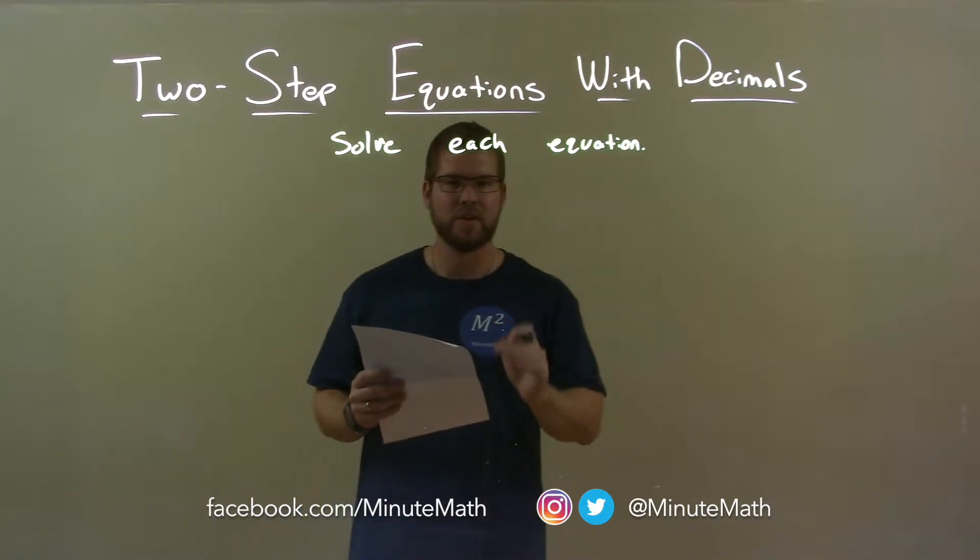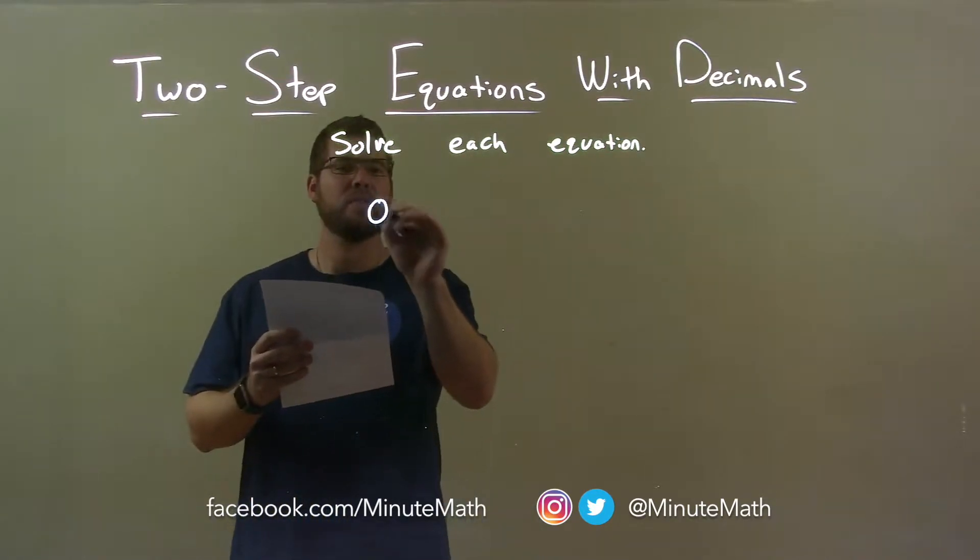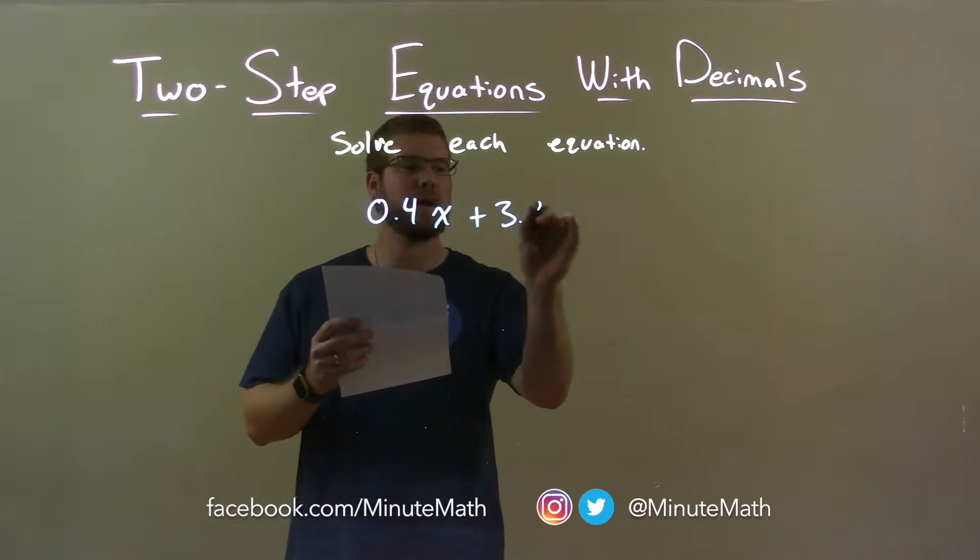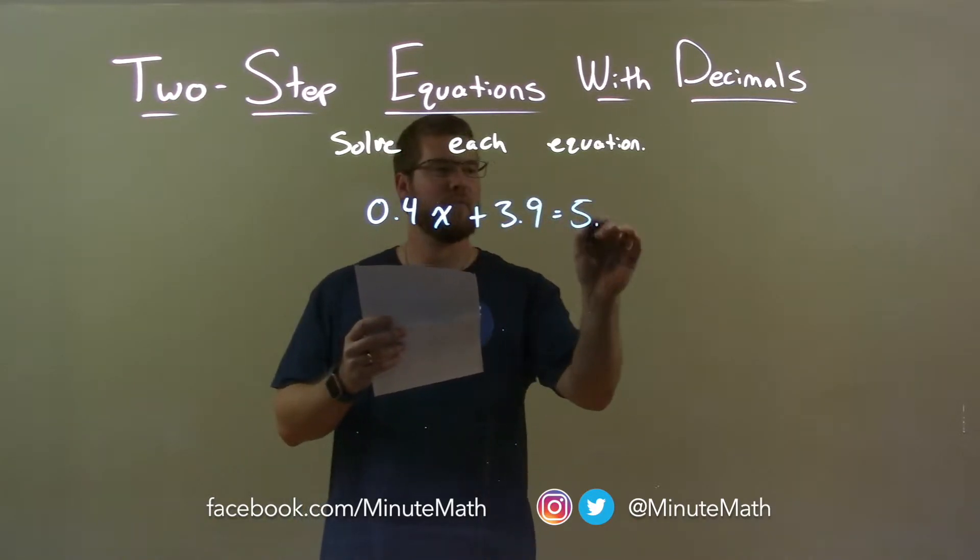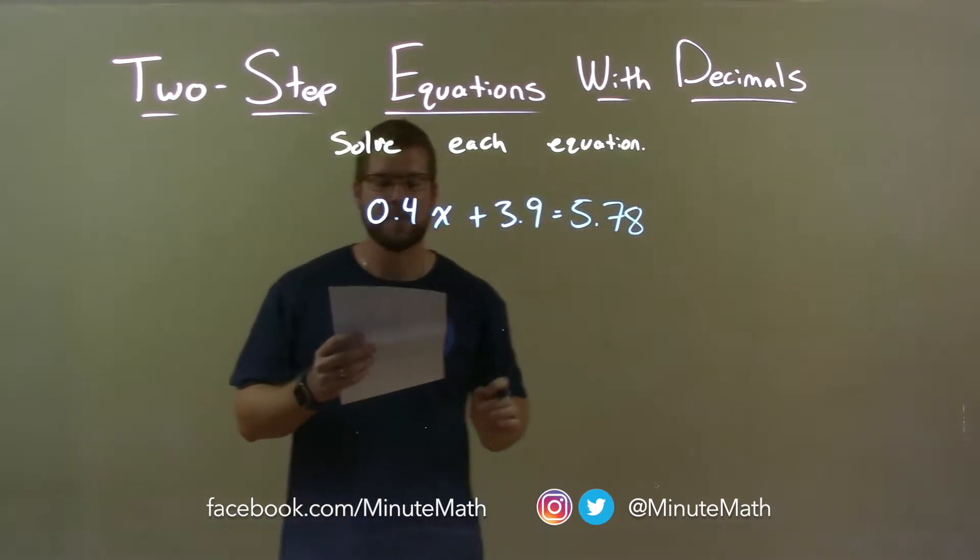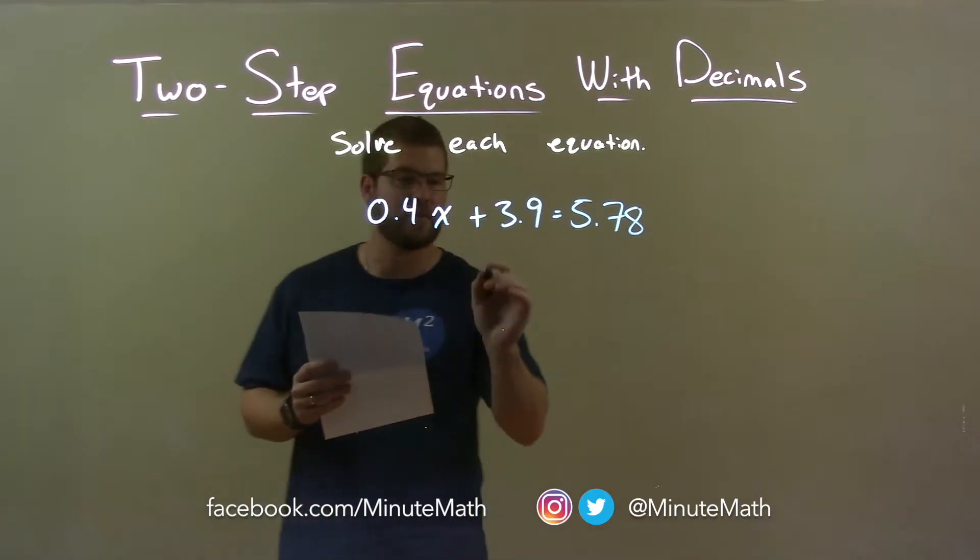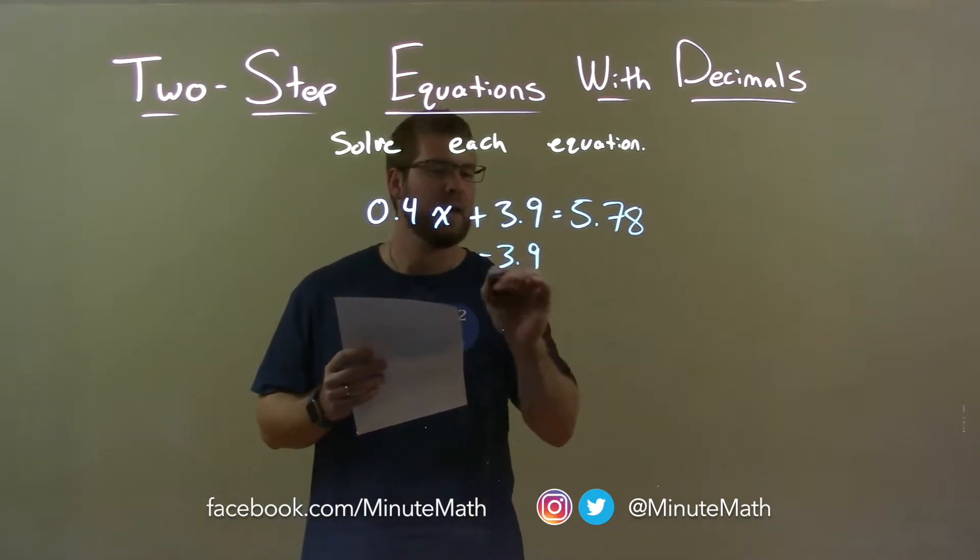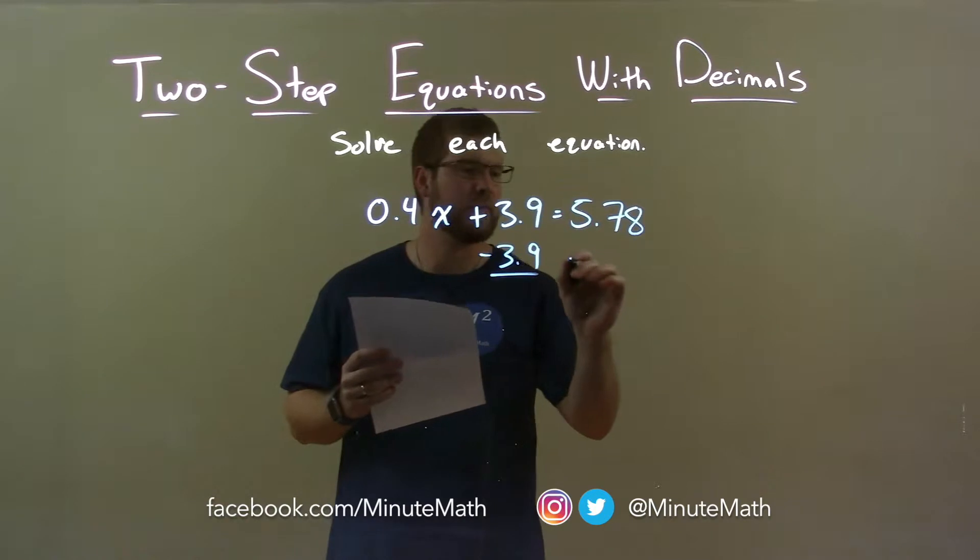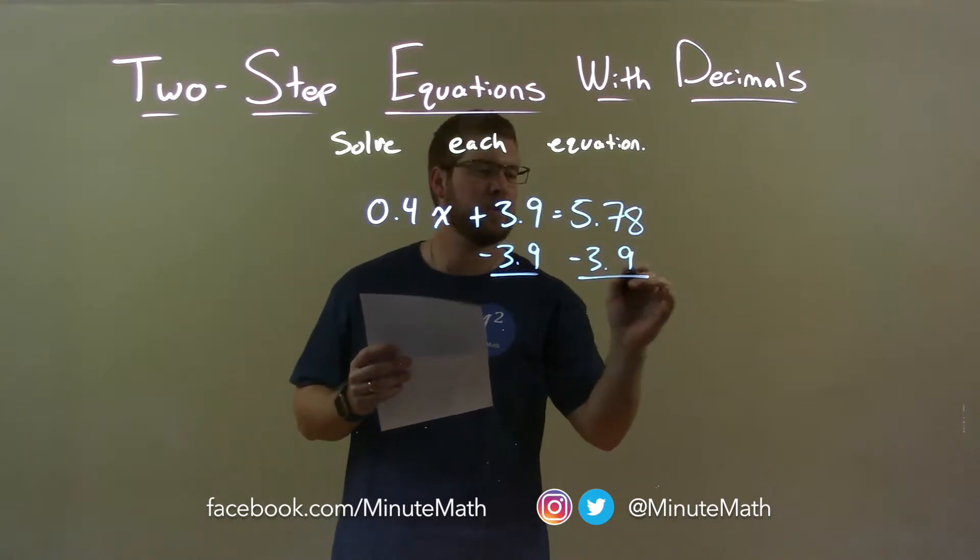Now, if I was given this equation: 0.4x plus 3.9 equals 5.78. First thing I want to do is subtract 3.9. Remember, opposite of addition is subtraction. We subtract 3.9 from both sides.